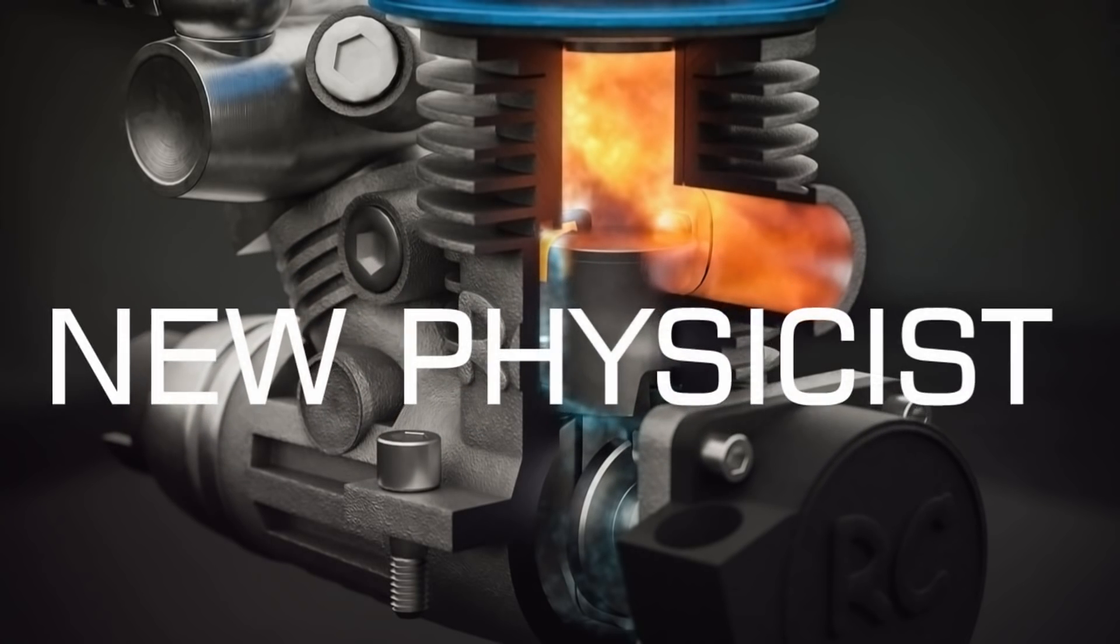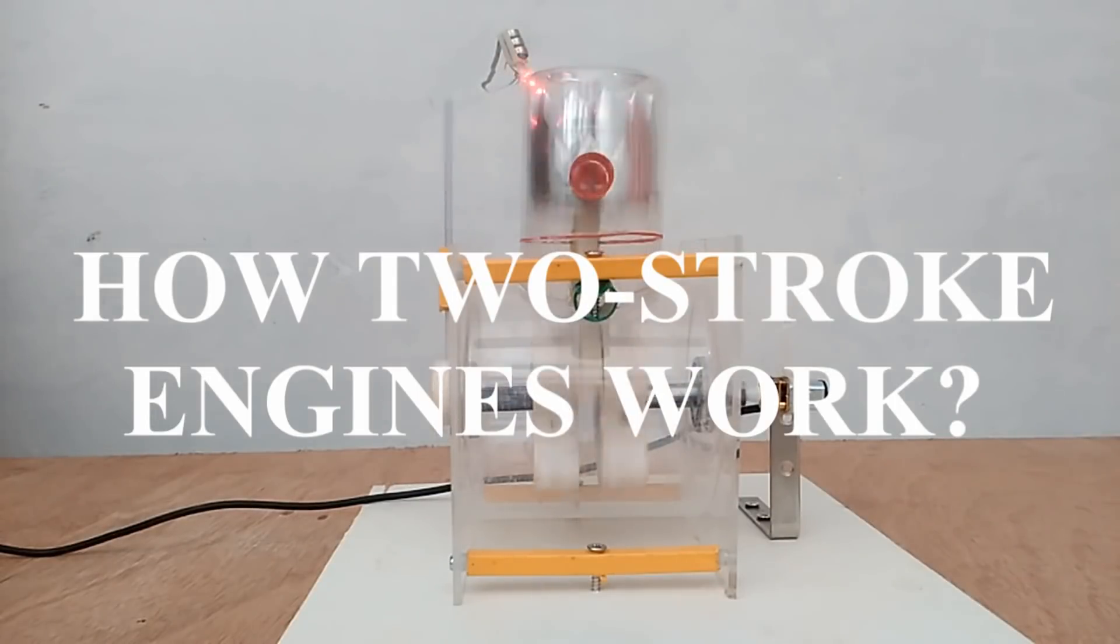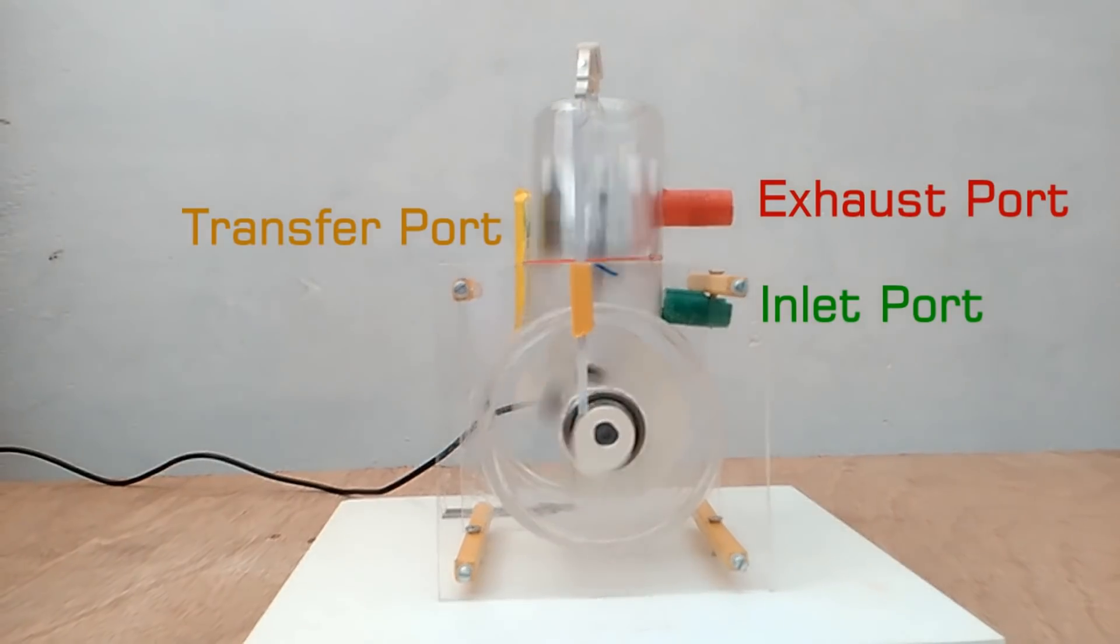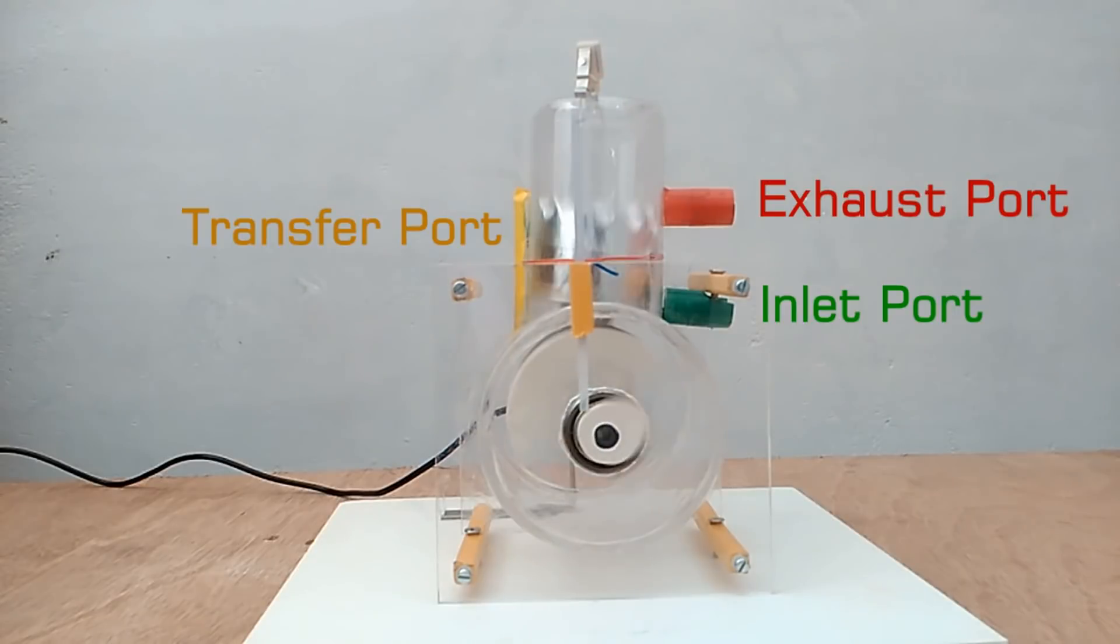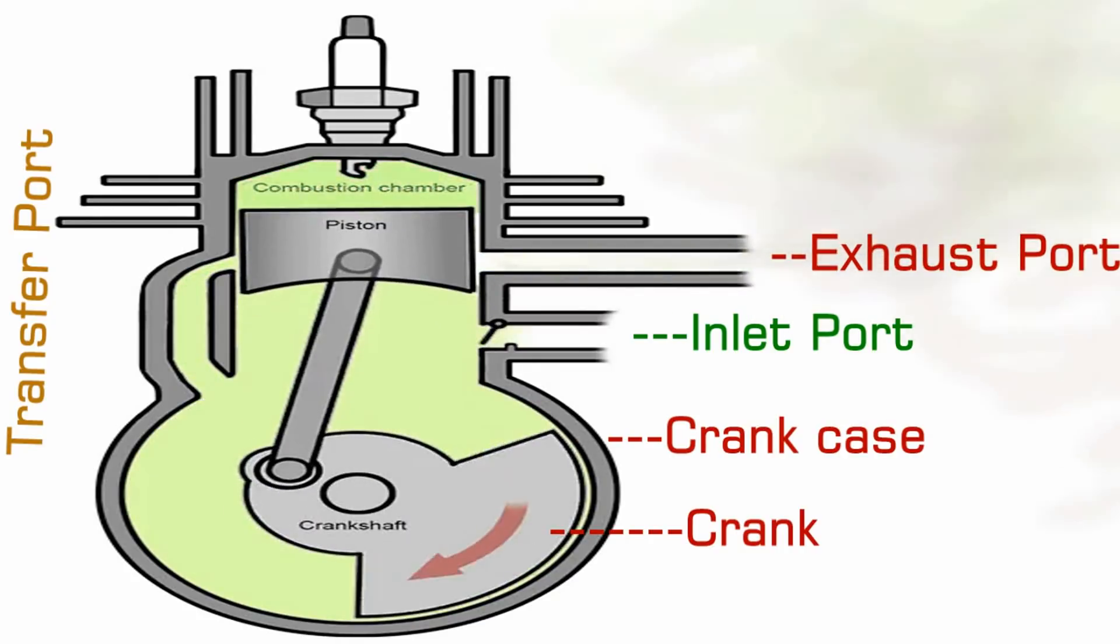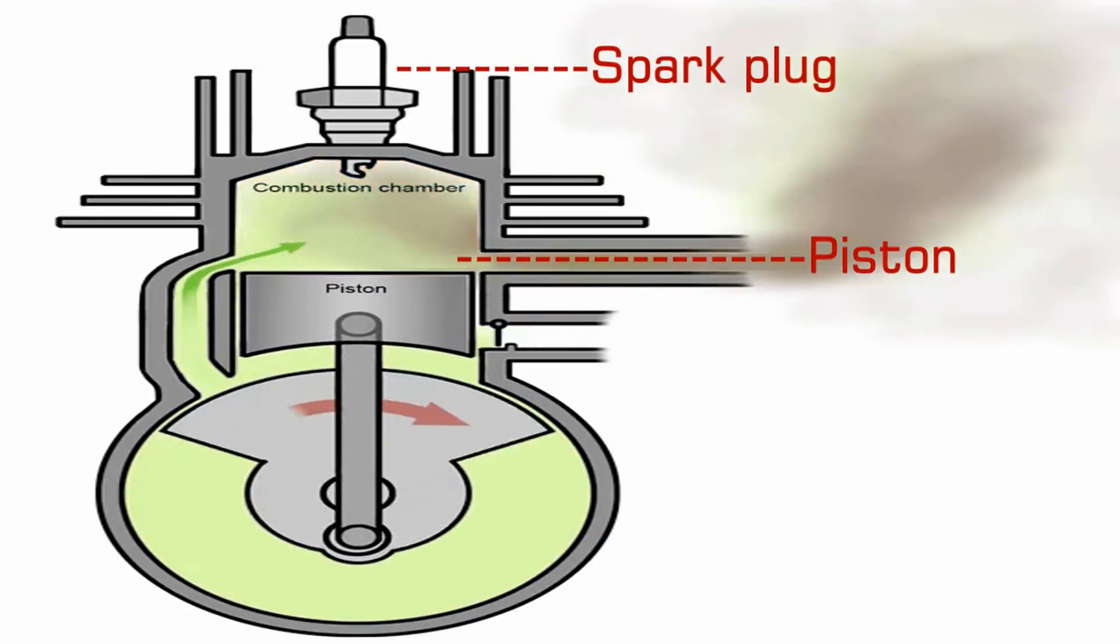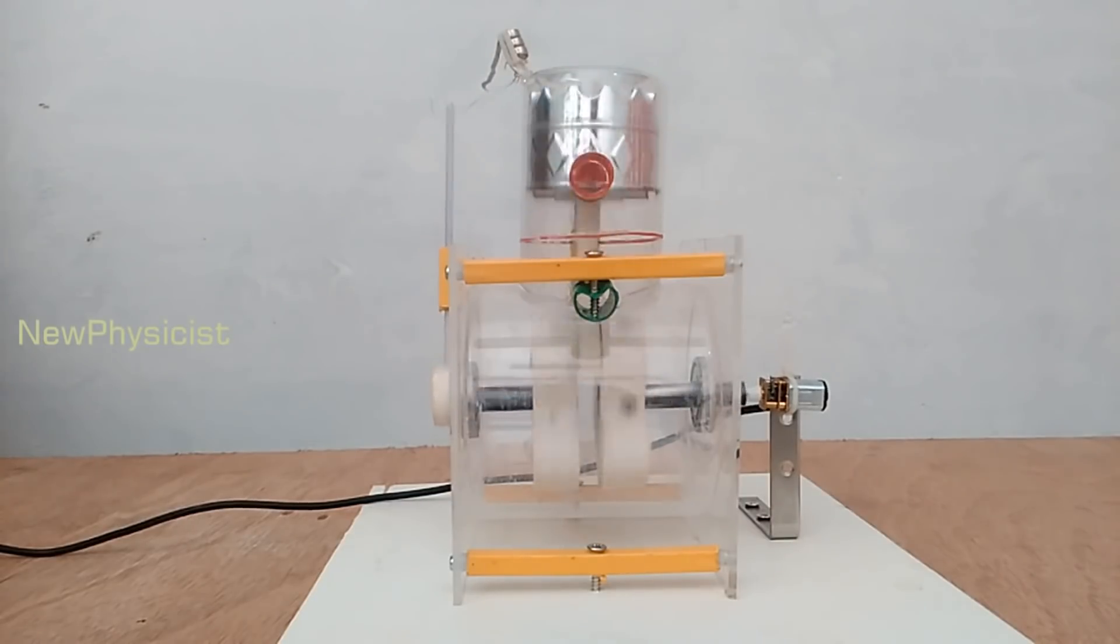This is New Physicist and you're watching Physics Behind Two-Stroke Engines. The term 'strokes' refers to the maximum vertical movement of a piston within a cylinder, with one stroke being a full descent of a piston to the bottom dead center and another being its movement all the way up to the top dead center.